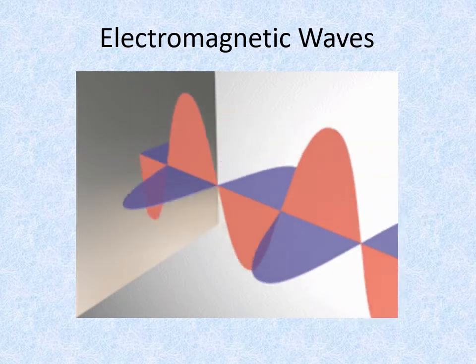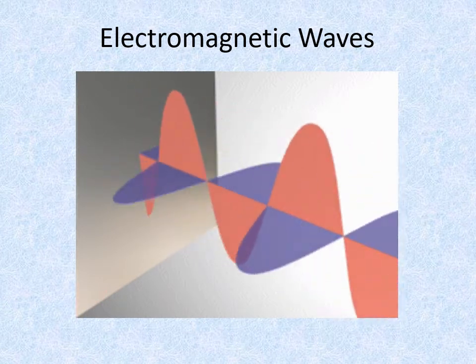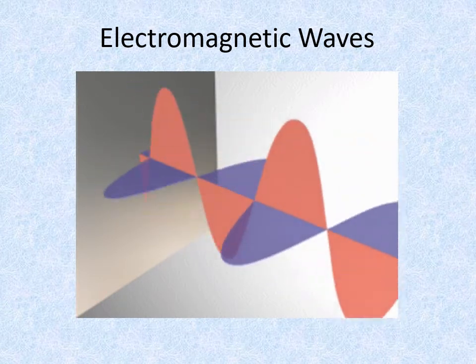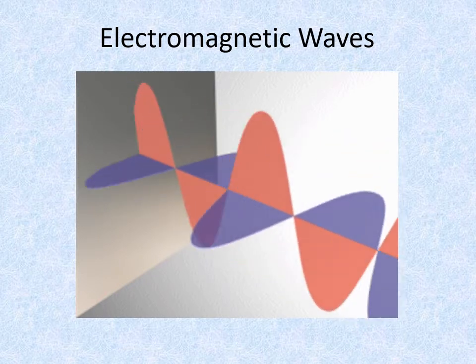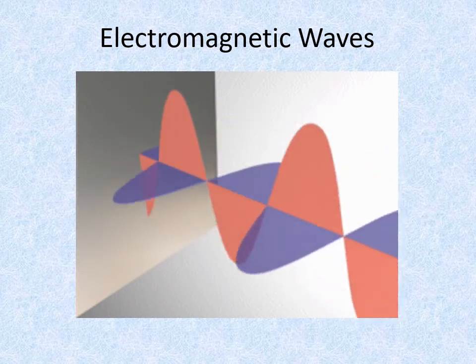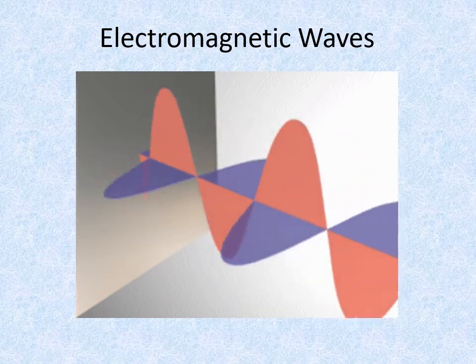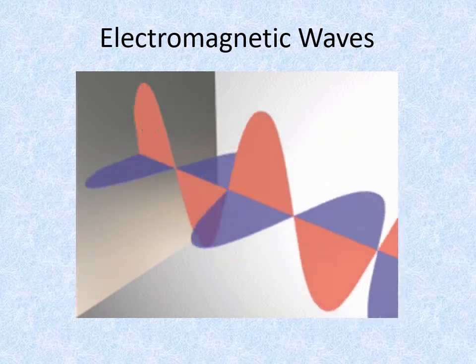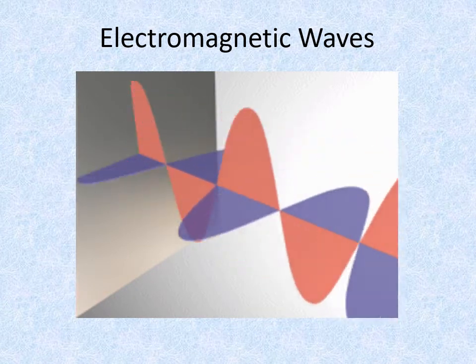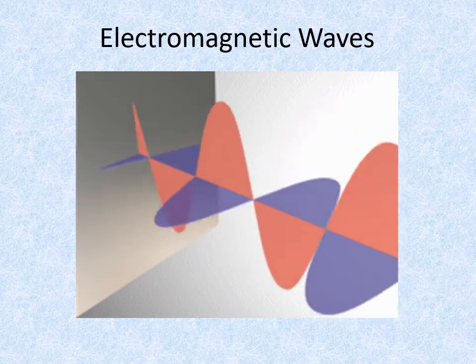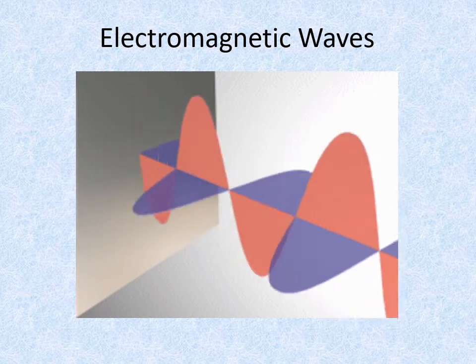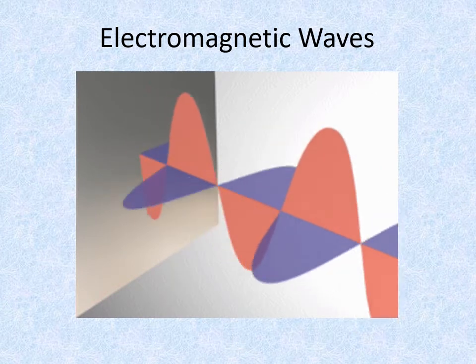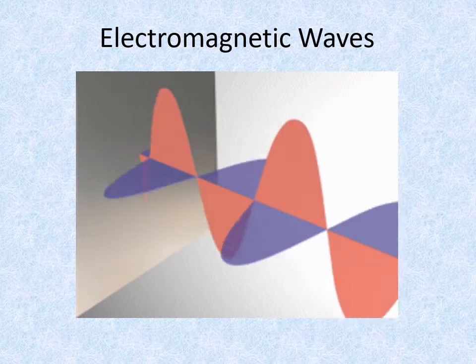It is created when an accelerating electric charge creates a moving electric field. Once the electron has stopped accelerating, its electric field rapidly collapses and induces a magnetic field at right angles, which itself then rapidly collapses, inducing an electric field, which then collapses, and so on. The two linked fields propagate or move through space at 300 million meters per second in a direction at right angles to both of them.